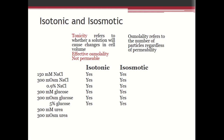For example, if a substance is freely permeable through the semi-permeable membrane, it will not contribute towards tonicity, but it can contribute towards osmolality. Sodium chloride is a solute that is not permeable through the semi-permeable membrane, so it contributes towards both tonicity and osmolality. On the other hand, urea is a freely permeable molecule, so urea contributes towards osmolality but not towards tonicity.